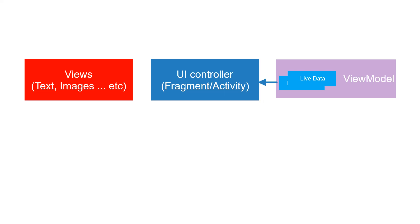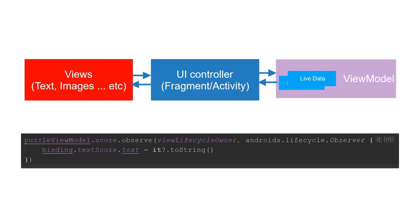Then the fragment accesses the views in the XML file and updates the UI. The same thing happens in the other direction as well — any changes in UI data will pass to the ViewModel using the fragment. In both cases this requires writing a lot of boilerplate code and sometimes it becomes cumbersome.